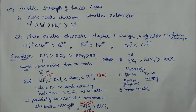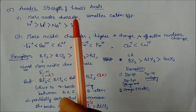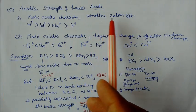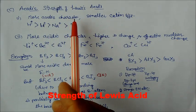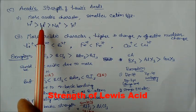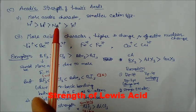Let us continue with the strength of acids, acidic strength of Lewis acids. Third, if the size of the cation is smaller, then it is more acidic in character. Here we can see H+ is smaller than lithium+, then sodium+, which is bigger. This is the increasing order of the cation size.